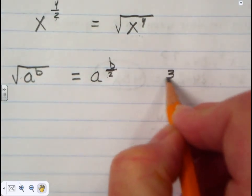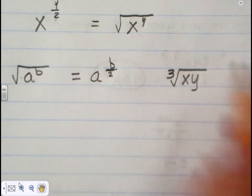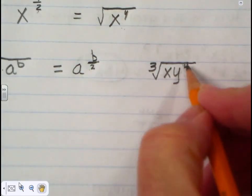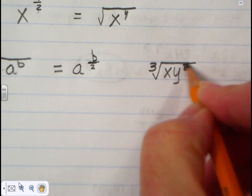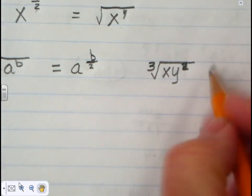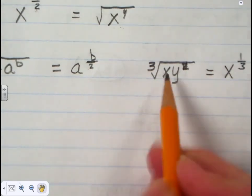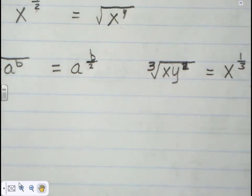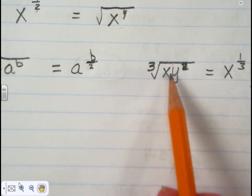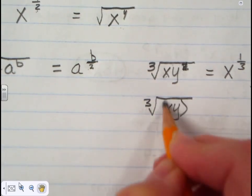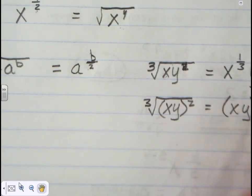Let's do one more example. If we have the cubed root of x times y to the z power, that becomes x to the one-third power — because x is to the first power and we're taking the cubed root — and then y to the z over three power. The z does not act upon the x because this is not in parentheses. If I had (xy) in parentheses, then this would be (xy) to the z over three power.